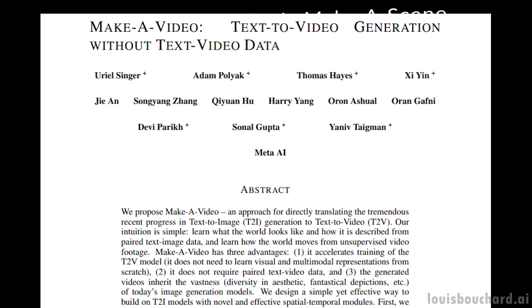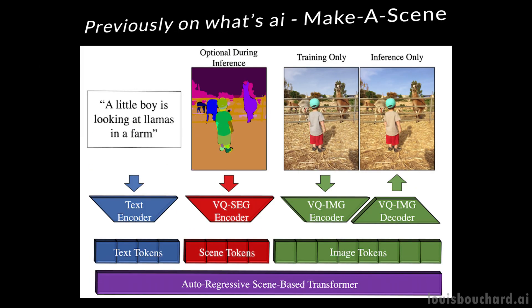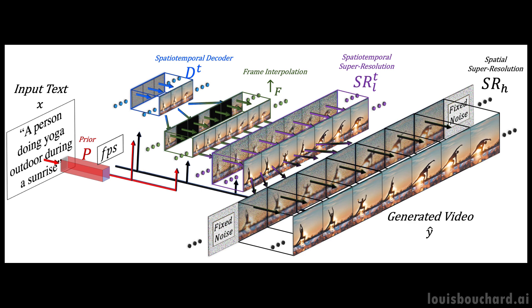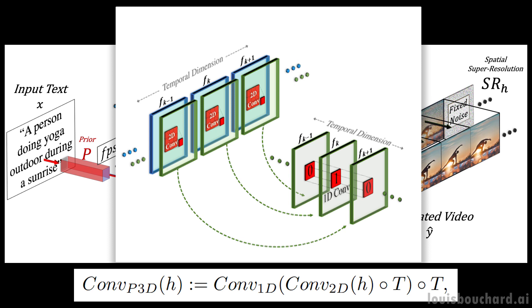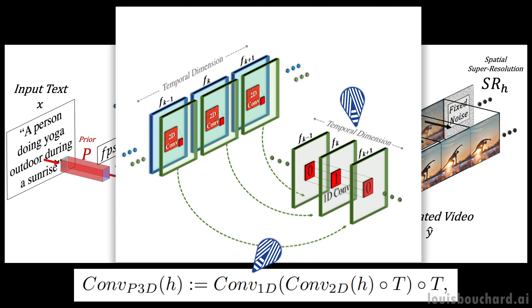In their case, the text-to-image model is another model by Meta called Make a Scene, which I covered in a previous video if you'd like to learn more about it. But how do you adapt such a model to take time into consideration? You add a spatial-temporal pipeline for your model to be able to process videos. This means the model will not only generate one image but in this case 16 of them in low resolution to create a short coherent video, adding a one-dimensional convolution along with the regular two-dimensional one. This simple addition allows them to keep the pre-trained two-dimensional convolutions the same and add a temporal dimension trained from scratch, reusing most of the code and model parameters from the image model they started from.